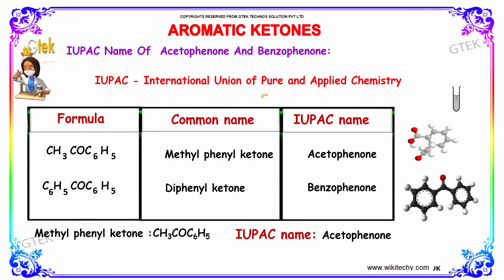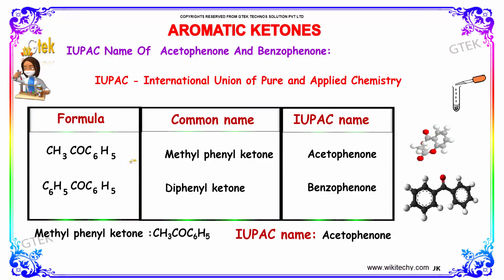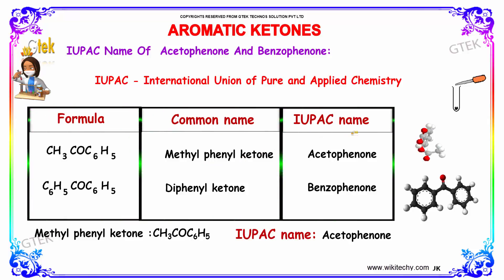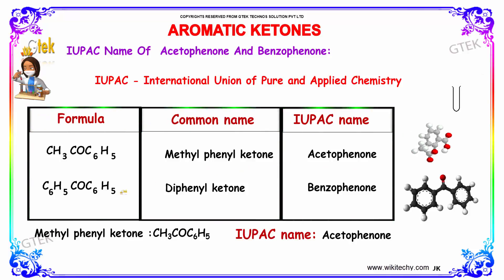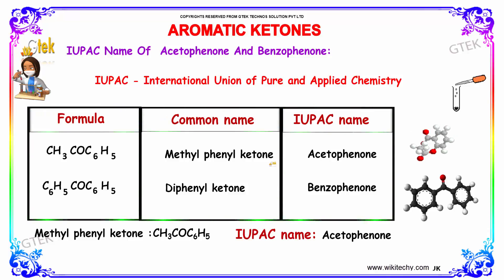The IUPAC name of Acetophenone and Benzophenone. The formula CH3COC6H5 has a common name Methylphenylketone and its IUPAC name as Acetophenone. Whereas the molecular formula C6H5COC6H5 has a common name Diphenylketone and IUPAC name as Benzophenone.